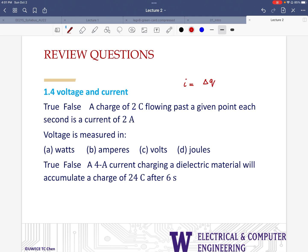Change of charge over the amount of time. So we are given that this is 2 coulombs and this is 1 second, which is going to give us 2 coulombs per second or 2 amps. So that means this is true.